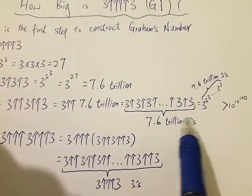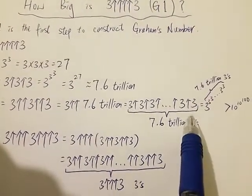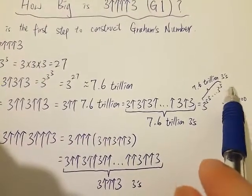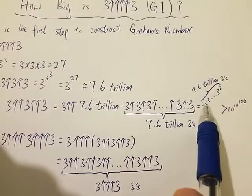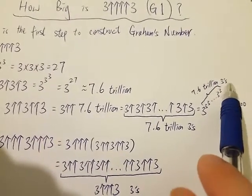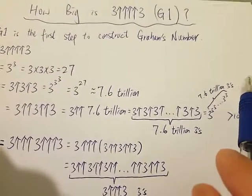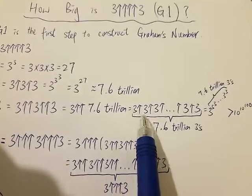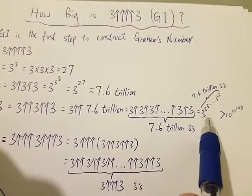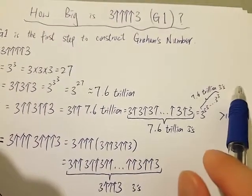Another way to represent this is a power tower of 3. So it equals 3 to the power of 3, to the power of 3, to the power of 3, and so on — and there are 7.6 trillion threes high. This is also known as the Sun Tower. So in this power tower, there are 7.6 trillion threes.